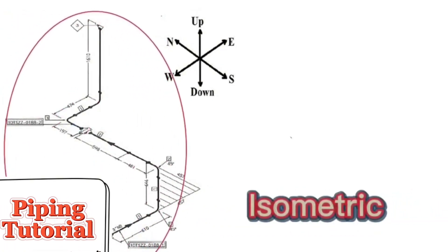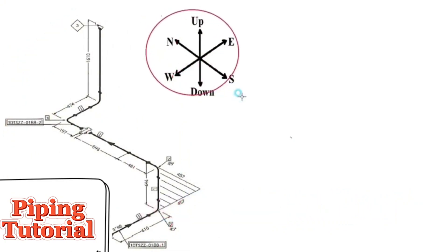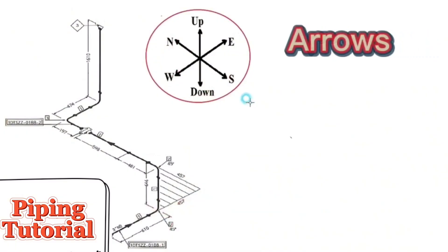This is pipe isometric drawing. Every pipe drawing has such a sketch, this indicates the directions. There are six directions here.